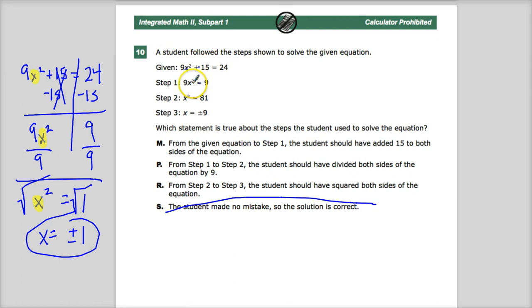So in the first step, they got to what looks like this. So that's looking pretty good. Step 2, X equals 81. Well, I was at X squared equals 1 at that point. X squared is equal to 1. So it's got to be somewhere between here and here.